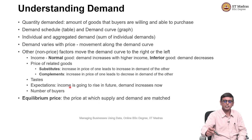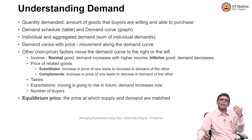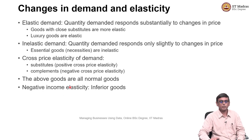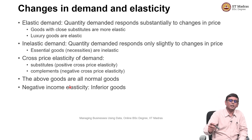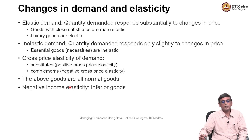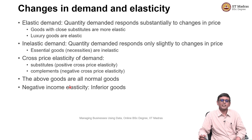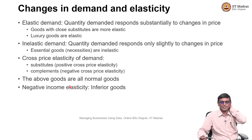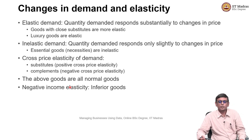Equilibrium price — or market clearing price — is the price at which demand and supply are matched. Then we see that demand can change in a way which is called elastic demand, which means that the quantity demanded responds substantially to changes in price. Luxury goods, for example, are elastic. Things which have close substitutes are considered more elastic.